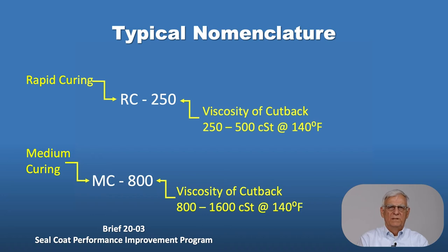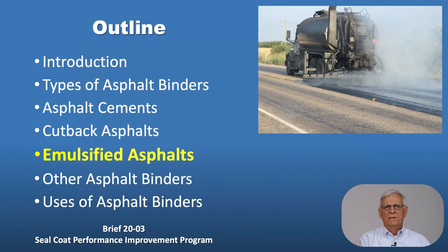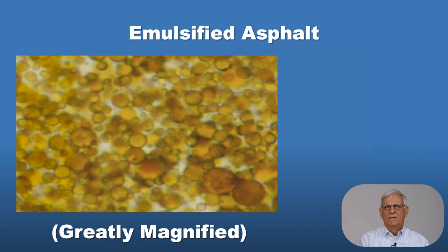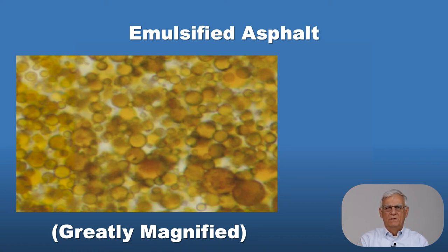There are a number of emulsified asphalts developed over the years for a variety of construction and maintenance uses. Emulsified asphalts are blends of asphalt cements, water, and a chemical or emulsifying agent. The emulsifying agent must be present because asphalt will not mix with water — just like oil will not mix with water — without some kind of a chemical. This chemical is like a soap, similar to dish soap used to get grease off pots and pans.